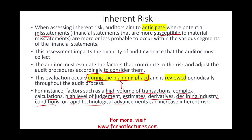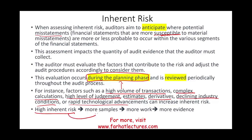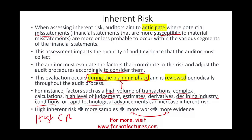How does high inherent risk affect our work? If we have a high inherent risk, we're going to collect more samples, do more work, and collect more evidence. Similarly, if we have a high control risk, we have to do more work because we cannot rely on the company's internal controls. So: high inherent risk or high control risk both mean more samples, more work, more evidence.